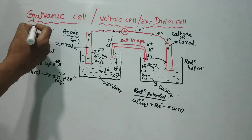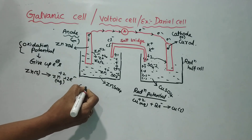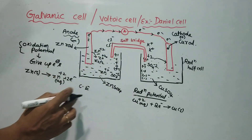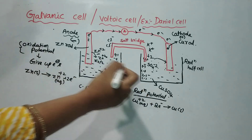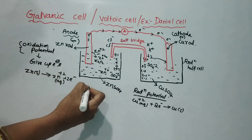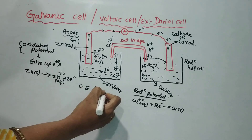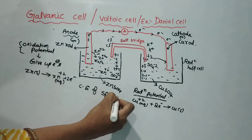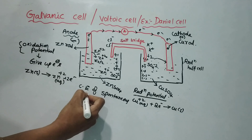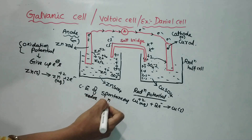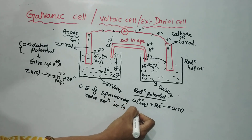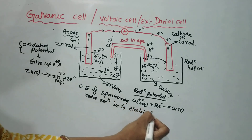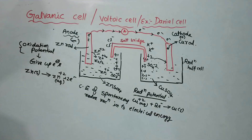This is the chemical energy of a spontaneous redox reaction — a spontaneous oxidation-reduction reaction — being converted into electrical energy. This is a galvanic cell.